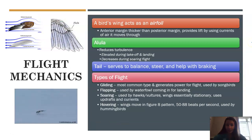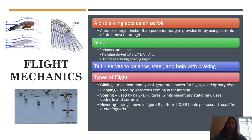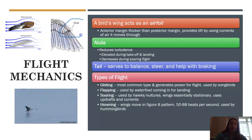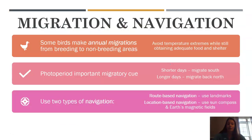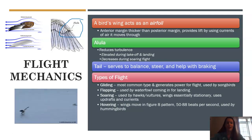In terms of flight mechanics, the bird's wing acts as an airfoil — it helps lift the bird as air currents move over it. Birds also have something called an alula at the very tip of their wing that helps reduce turbulence. Their tail also helps to steer. There are four types of flight: gliding, which is the most common; flapping, used by waterfowl; soaring; and hovering.